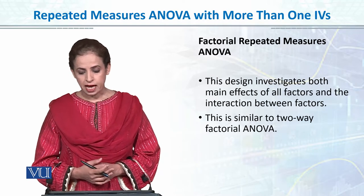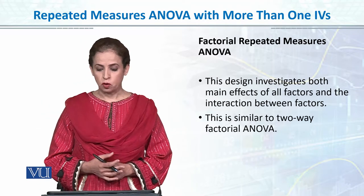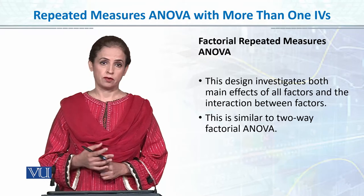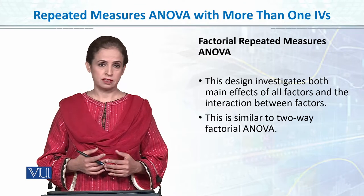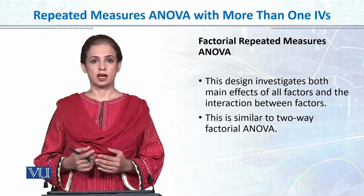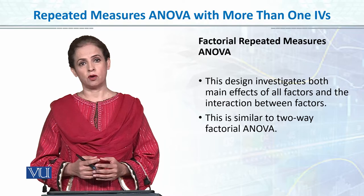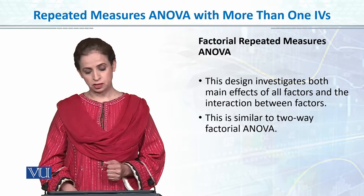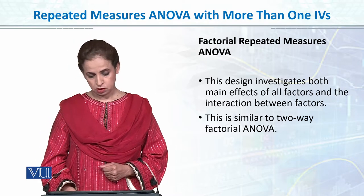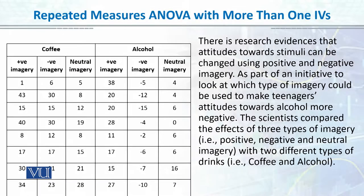The design investigates both the main effects of all factors and the interaction effect of both factors — just as we examined main effects and interaction effects in independent factorial ANOVA. Similarly, this is how the two-way factorial ANOVA works here.